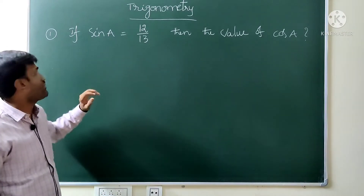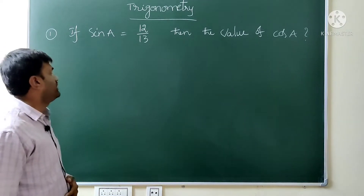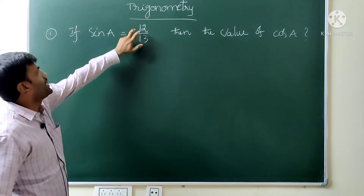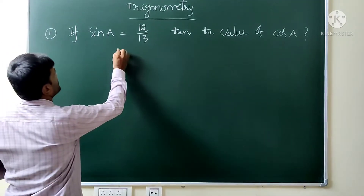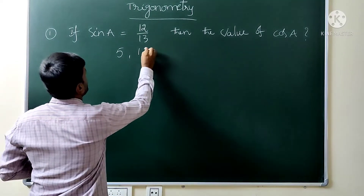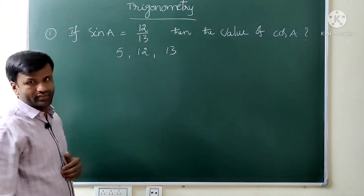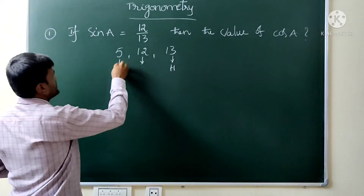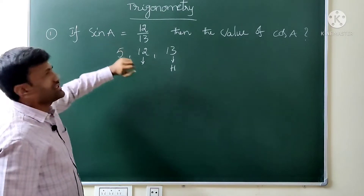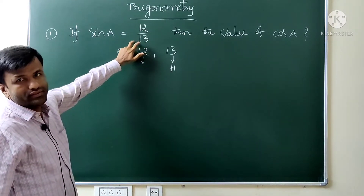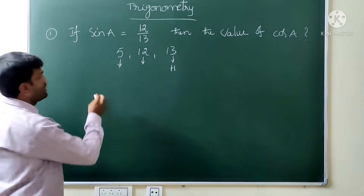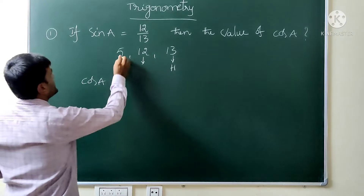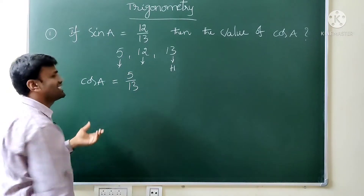We will see the first question. If sin A equals 12 by 13, then the value of cos A is? Here, 13 is the hypotenuse and these two are sides. Sin A is opposite side by hypotenuse. Cos A is adjacent side by hypotenuse. So adjacent side is 5, hypotenuse is 13. So cos A is 5 by 13.